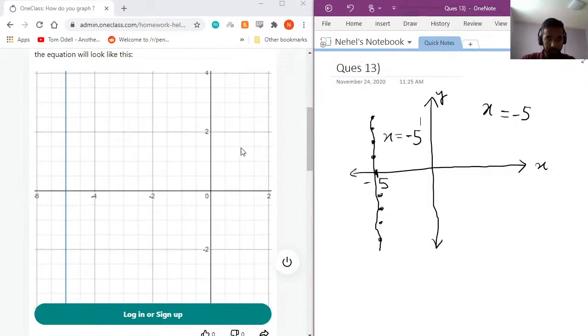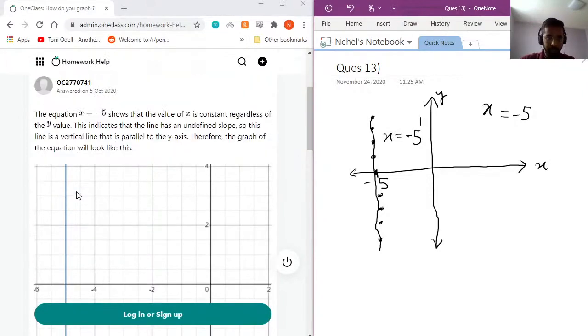So perfect. Cartesian plane, x equals negative 5, perfect.